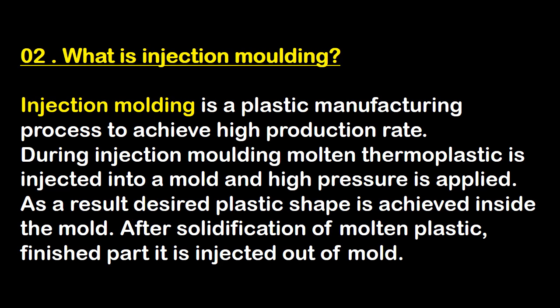Second question: what is injection molding? Injection molding is a plastic manufacturing process used to achieve high production rates. During injection molding, molten thermoplastic is injected into the mold and high pressure is applied; as a result, the desired plastic shape is achieved inside the mold. After solidification of the molten plastic, the finished part is ejected out of the mold.